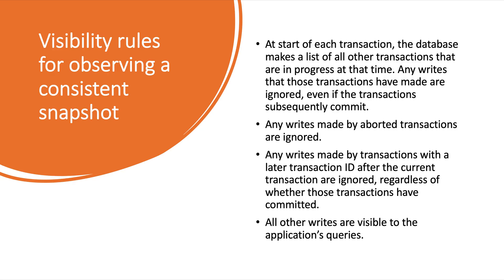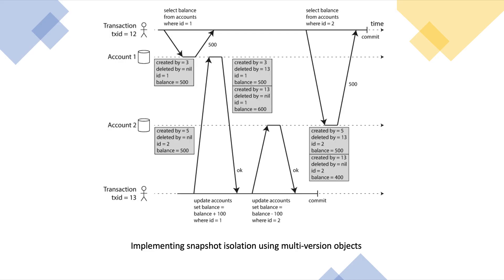Let's look at the visibility rules applied to observe a consistent snapshot. At the start of each transaction, the database makes a list of all other transactions that are in progress at that time, and any writes those transactions have made are ignored — even if those transactions subsequently commit. In our example, when transaction 12 started, transaction 13 had not yet started. Even though transaction 13 committed before transaction 12 finished, transaction 12 ignored the writes made by transaction 13.